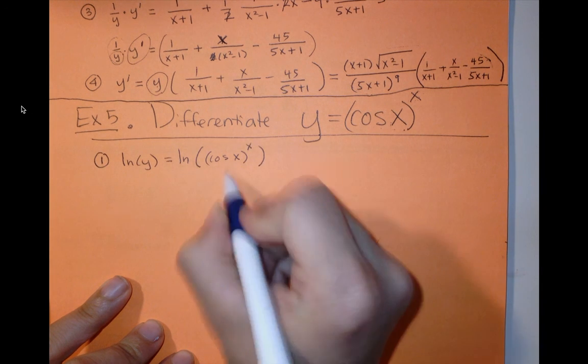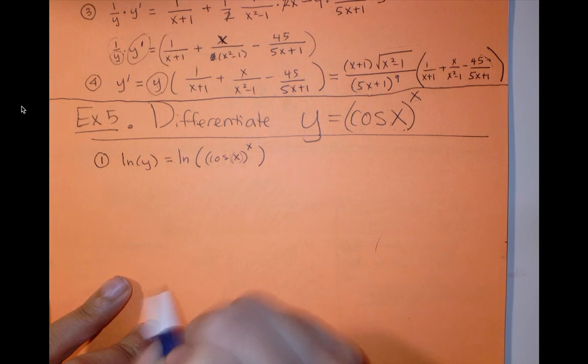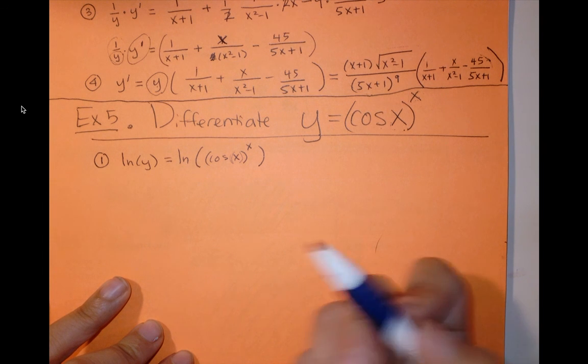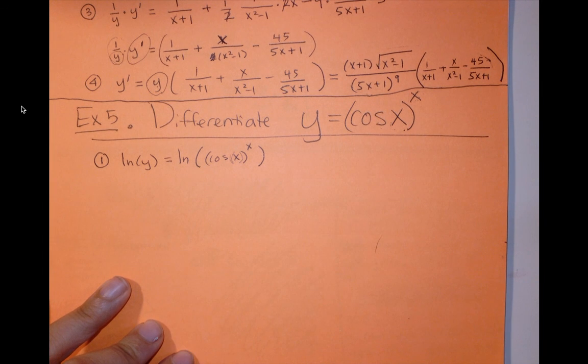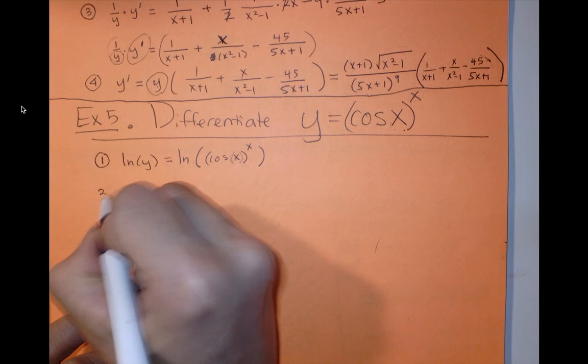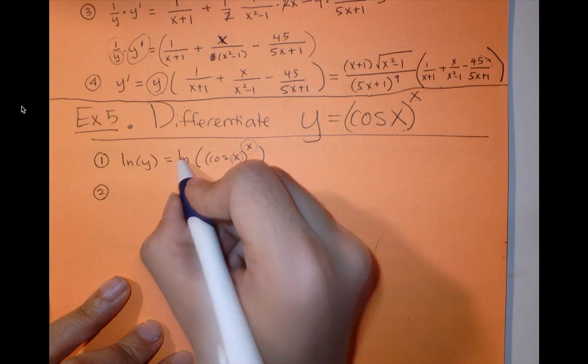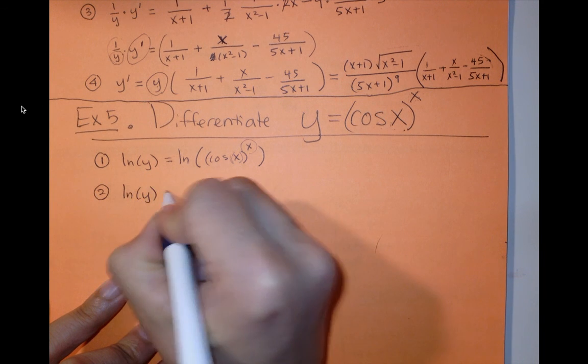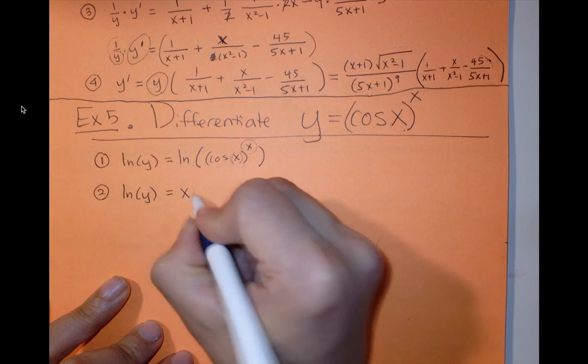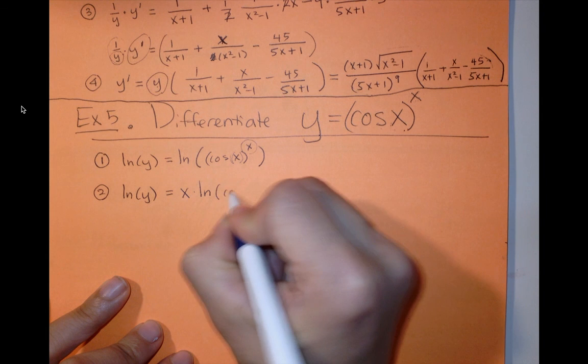So remember this first step is we apply the natural log to both sides. Remember in webassign to always put parentheses around your input for cosine or sine or natural log. So now second step is we use the property of logs to bring this x out of the exponent. So I have ln y is equal to x times ln of cosine of x.